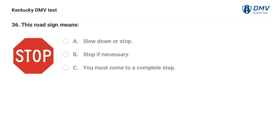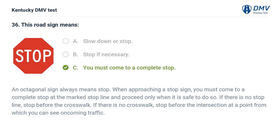This road sign means: A. Slow down or stop. B. Stop if necessary. C. You must come to a complete stop. The correct answer is C, you must come to a complete stop. An octagonal sign always means stop. When approaching a stop sign, you must come to a complete stop at the marked stop line and proceed only when it is safe to do so. If there is no stop line, stop before the crosswalk. If there is no crosswalk, stop before the intersection at a point from which you can see oncoming traffic.